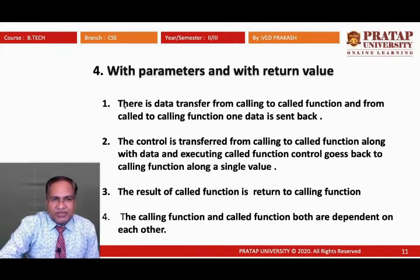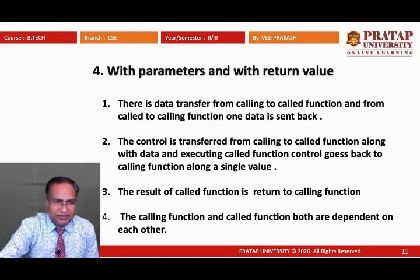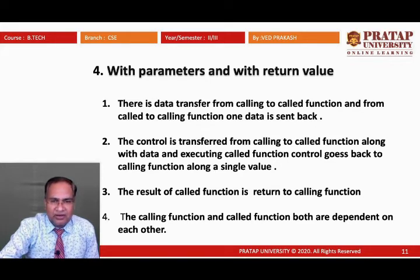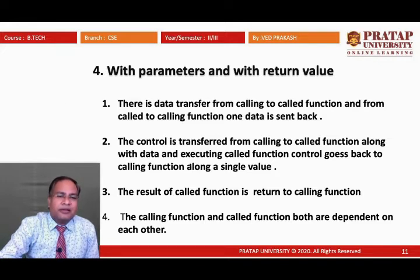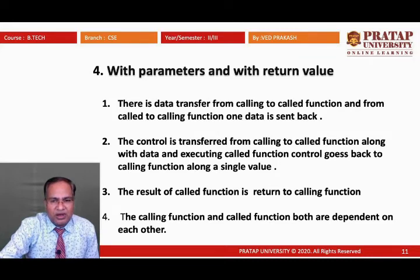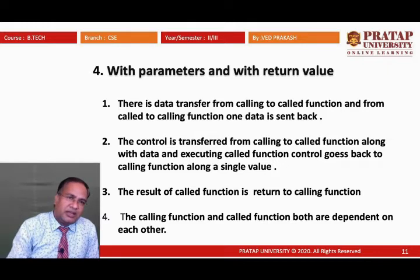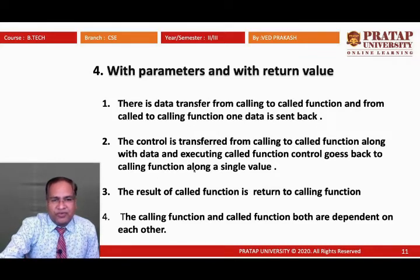Key points for functions with parameter and with return value: there is data transfer from calling to called function and from called to calling function one data value is sent back. Control transfers from calling to called function along with data, and after executing, control returns to calling function along with a single return value. The result of the called function is returned to the calling function. Both calling and called functions are dependent on each other — this category uses mutual transmission of information between them.